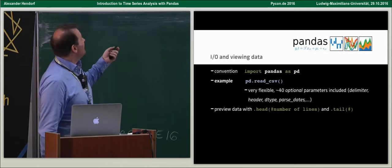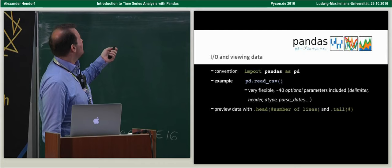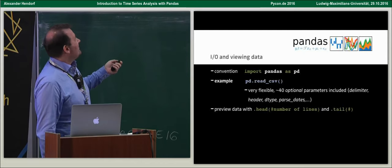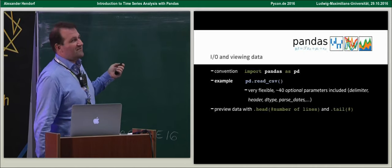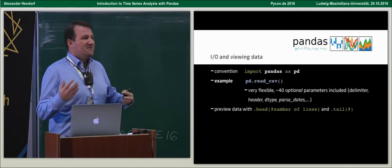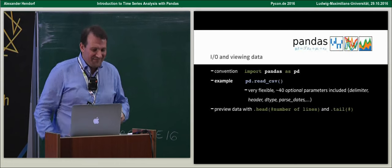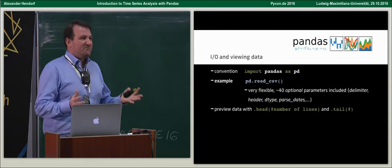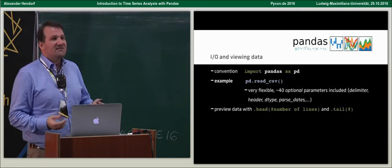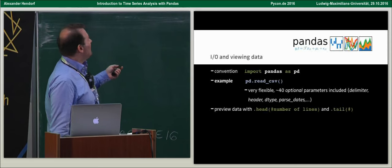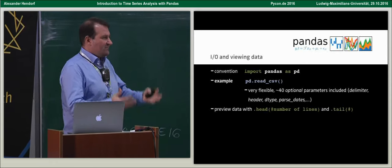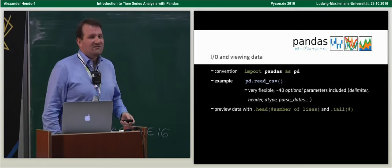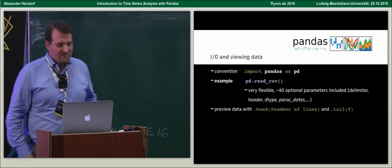Reading files is very flexible — you have around 40 optional parameters you can pass in, like whether there's a header, data types, parse dates, and many more. Just look it up in the documentation, it's well documented. Even if you have special CSV files you can adapt. You can also specify how datetime is formatted when you import it. Once everything is set up, you can preview data with head and tail.